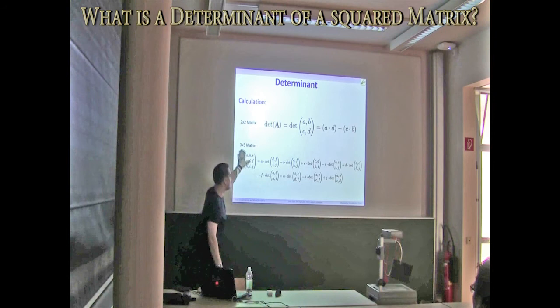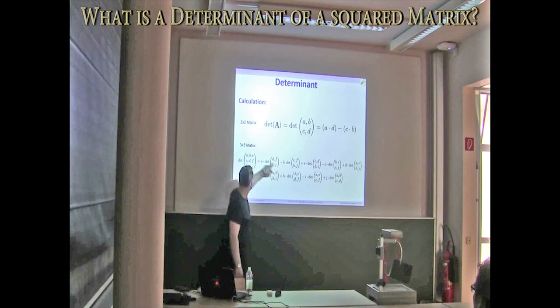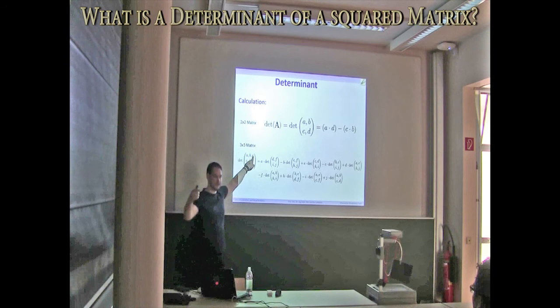Consider the sub-matrix, or the determinant of the sub-matrix, C, B, and I. And this means for the second value, there's a quite simple rule. And then you have to get the contribution, B, times the determinant of C, H, F, I, and so on and so forth.